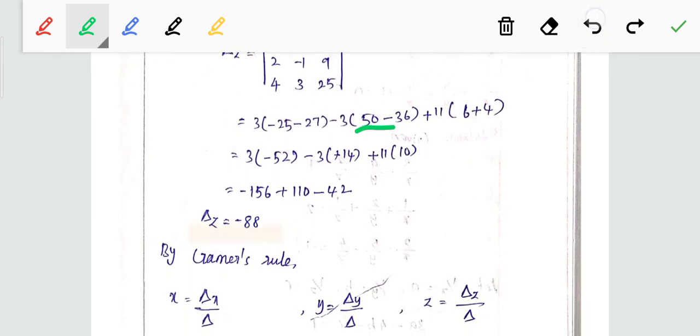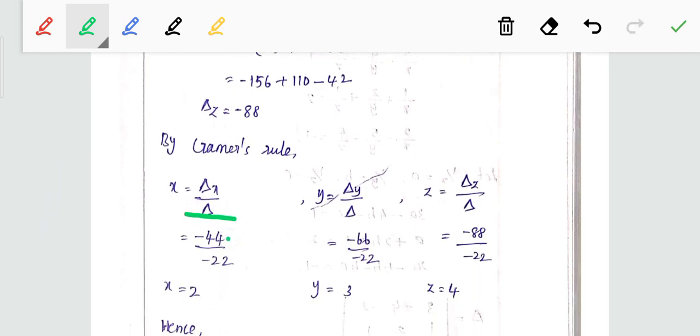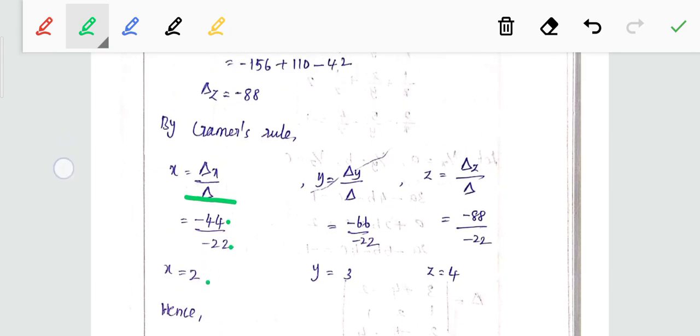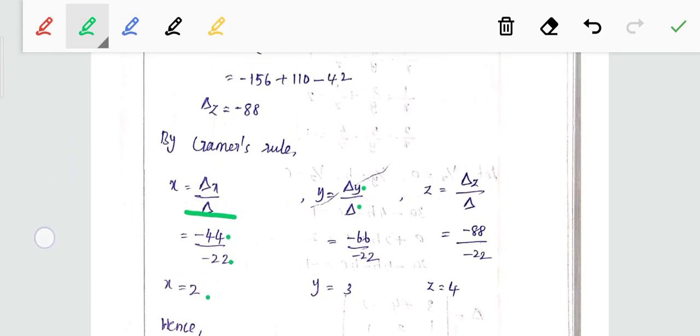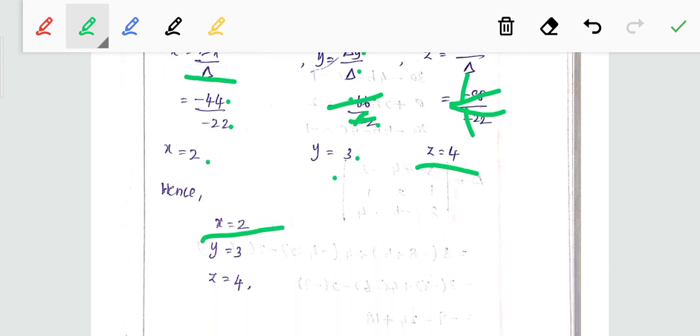So Cramer's rule: x equals del x by del. Del x is minus 44 and del is minus 22, canceling gives 2. Y equals del y by del: minus 66 by minus 22, minus minus cancels, 66 by 22 is 3. Z equals del z by del: minus 88 by minus 22, canceling gives 4. Hence x equals 2, y equals 3, z equals 4.